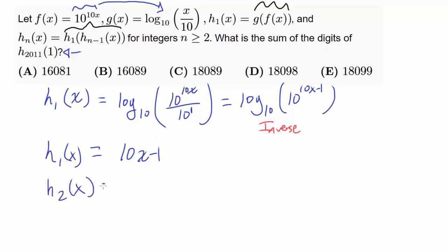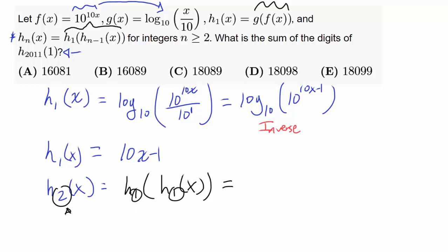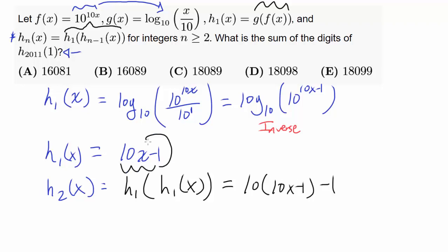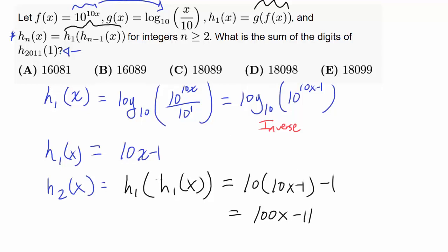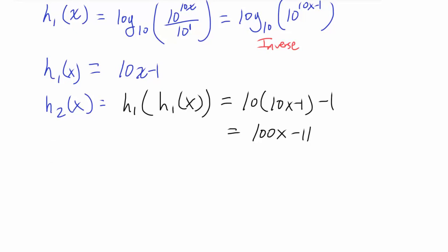What is h₂(x)? Using the recursive formula, h₂(x) = h₁(h₁(x)). So we plug h₁(x) = 10x − 1 into h₁, giving 10(10x − 1) − 1 = 100x − 10 − 1 = 100x − 11. So h₂(x) = 100x − 11.